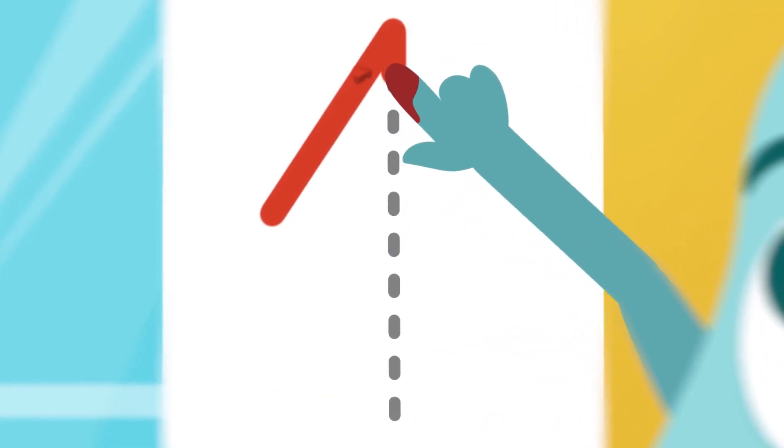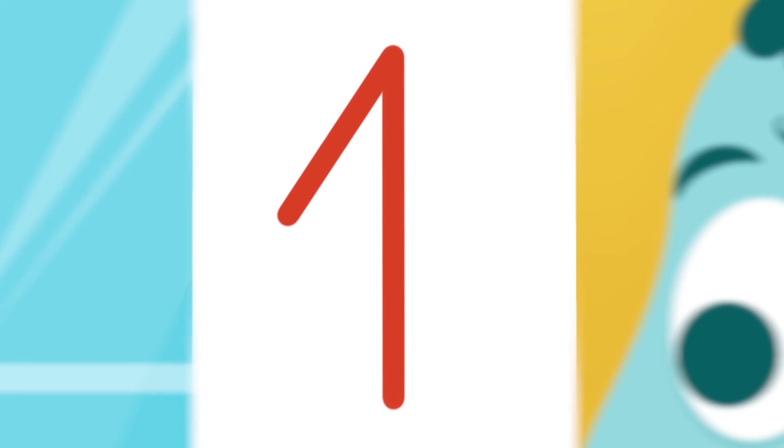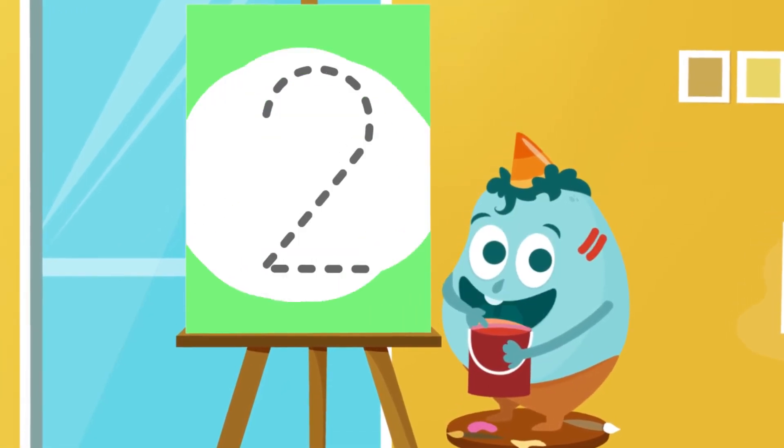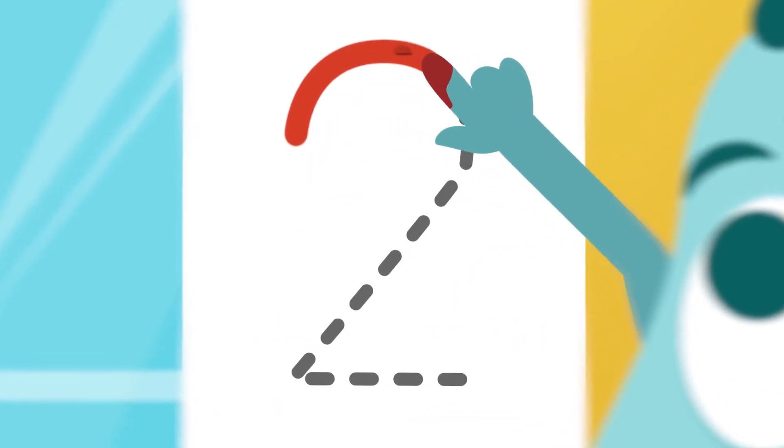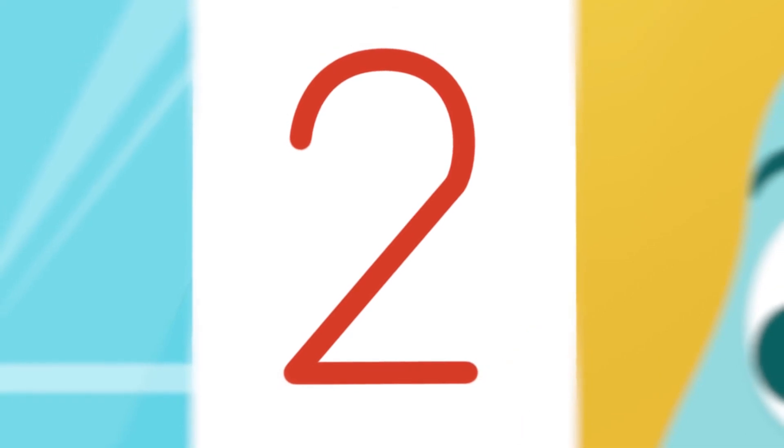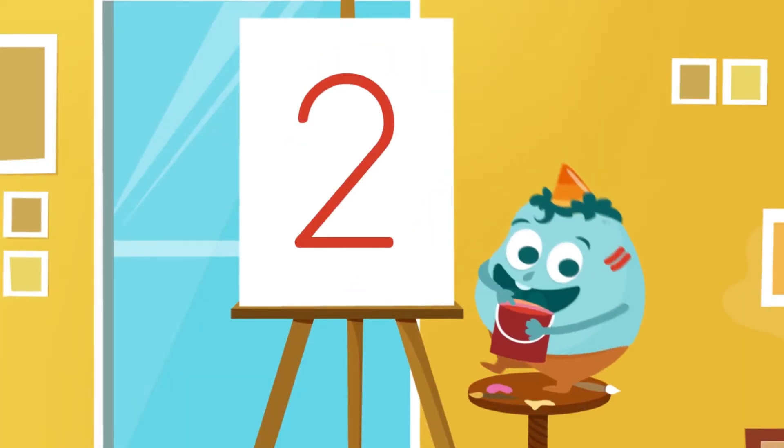Let's start here. We go up and now down here. What number is this? Number one! Great! Let's see if you can figure out the next one. Let's make a curve like this and when we get to the bottom, we make a straight line to the right. What number is this? Number two! Perfect!